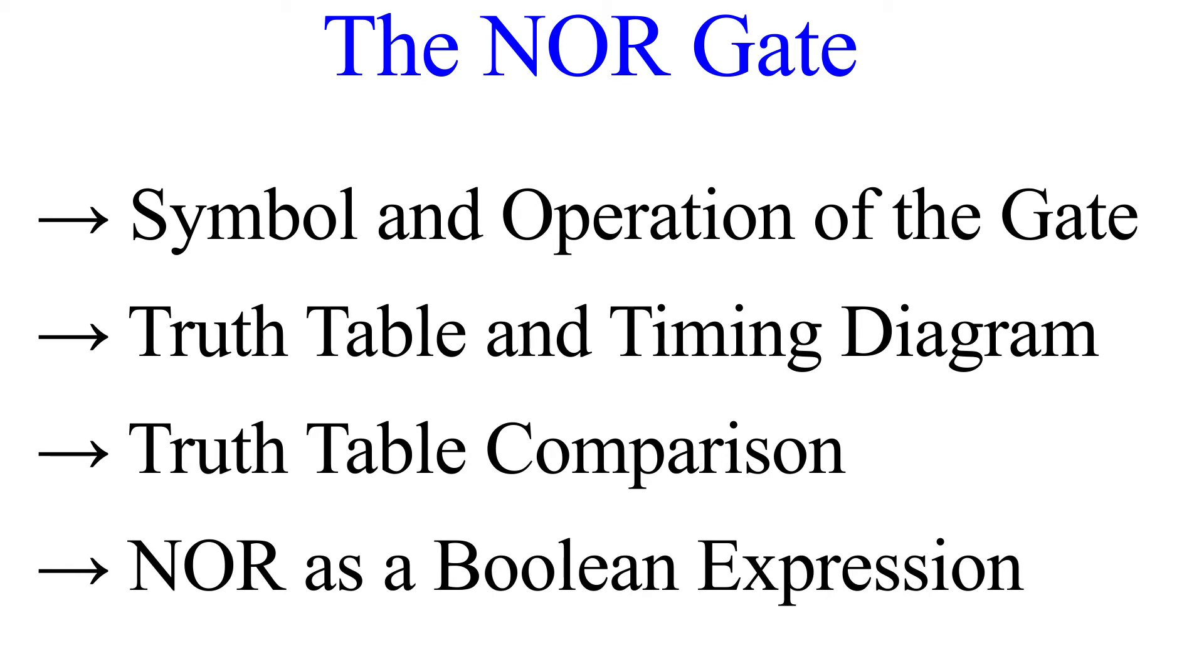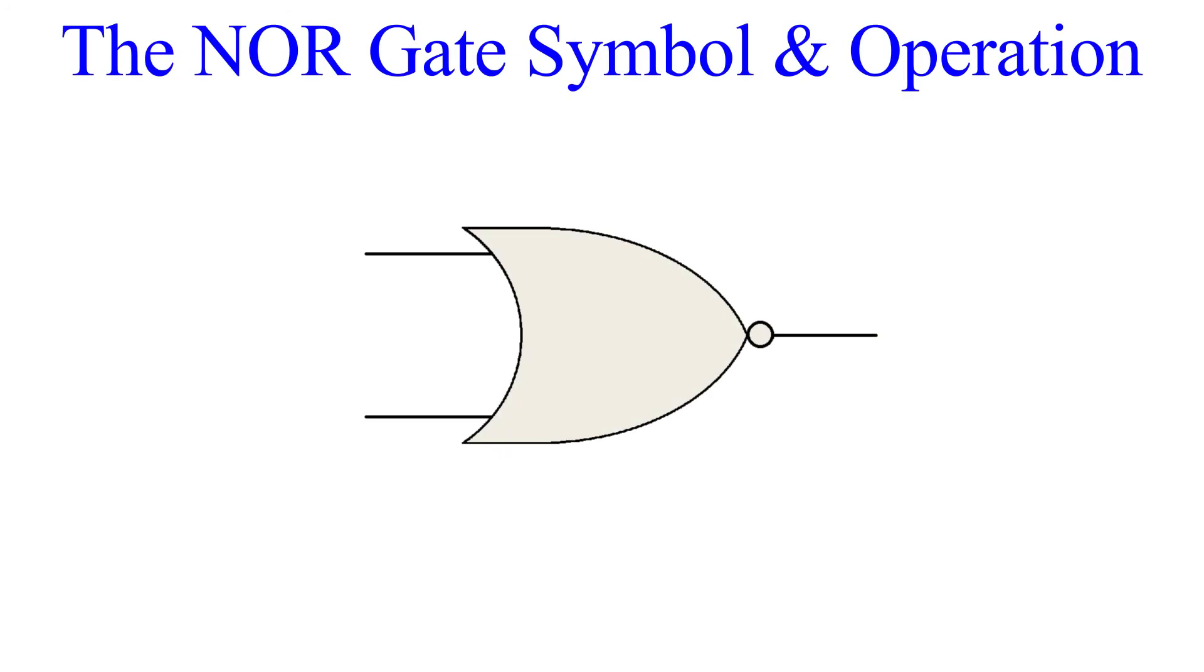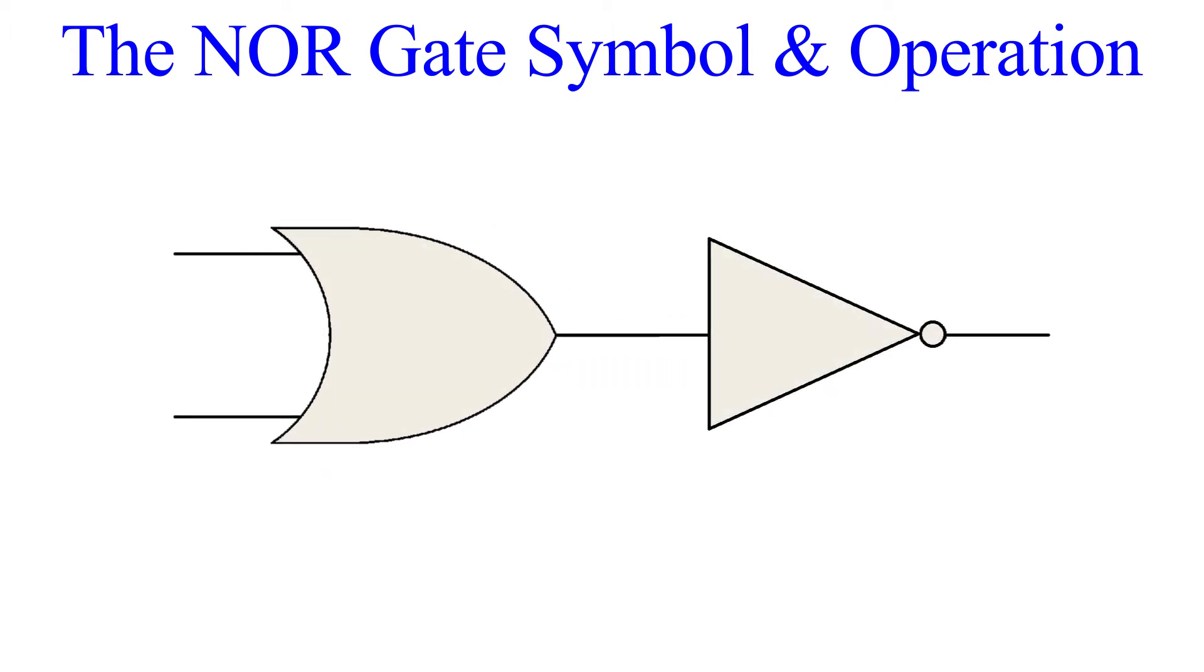Let's start with the symbol and its function. This is the symbol of the NOR gate. Notice that it is almost identical to the OR gate except for the little bubble on the output. This bubble indicates negation or inversion of the output. Essentially, this is an OR gate with an inverter attached to the end.